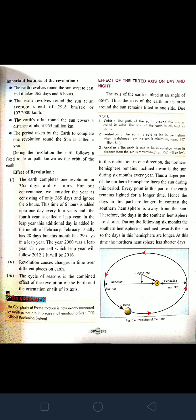The earth's orbit around the Sun covers a distance of 965 million kilometers, and hence the earth takes around 365 days and six hours to complete this revolution. For our convenience we take only 365 days, which is known as a year. During the revolution we ignore the six hours, but these six hours are then added together.